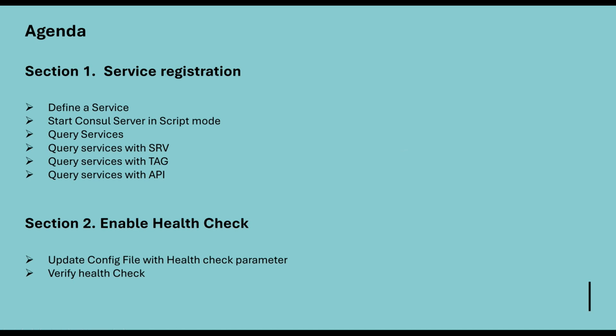Under section one, service registrations, we are going to see the steps for how we can define the services. There is an additional parameter I've added — how we can start the Consul server in script mode. Previously I simply started my HashiCorp Consul server in development mode, but here I am adding something new called script mode. The third step is how we can do the service registrations and how we can query the services to verify they are registered with the Consul services.